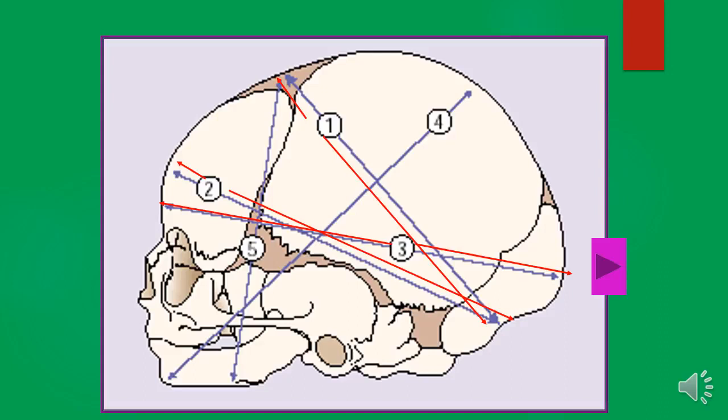Our third diameter is called the occipital frontal. The occipital frontal is about 11.5 centimeters, and it is measured from the occipital protuberance to the glabella. That is our third diameter on our fetal skull.